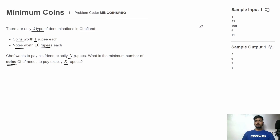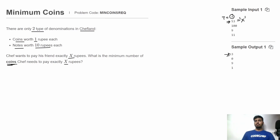Let's see the input and output structure. In the input, first we get the total number of test cases, then for each test case we get one integer — the value of X, which is the amount chef needs to pay. In the output we need to print the minimum number of coins required to pay exactly that amount.